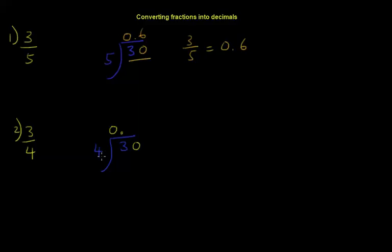And then we go ahead and divide like normal. So how many 4s go into 30? There's nothing that multiplies 4 to make 30 exactly. But we know that 4 times 7 gives us 28, which is just under 30.